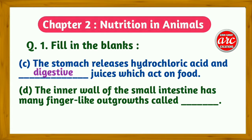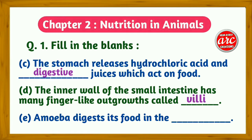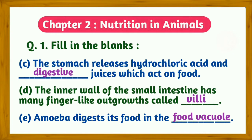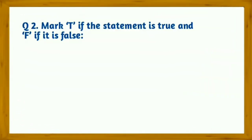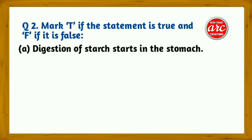(d) The inner wall of the small intestine has many finger-like outgrowths called villi. (e) Amoeba digests its food in the food vacuole. Question 2: Mark T if the statement is true and F if it is false.